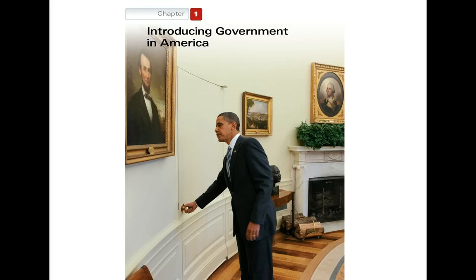Two fundamental questions about governing serve as themes throughout this book. First, how should we govern? Americans take great pride in calling their government democratic. This chapter examines the workings of democratic government, and the chapters that follow will evaluate how American government actually works compared to the standards of an ideal democracy. We will continually ask: who holds the power, and who influences the policies adopted by government?